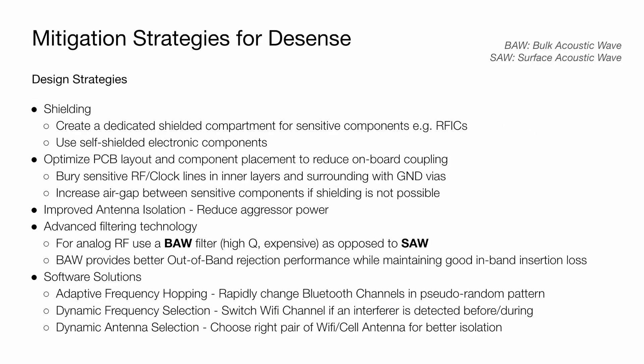Let's talk about mitigation strategies for desense. Shielding is one of the most popular techniques in the industry — you can create a shield can around sensitive components such as the RFIC. If you're heavily constrained on space, you can also go for self-shielded electronic components. Optimizing PCB layout and component placement is another approach: you can bury sensitive clock and RF lines into inner layers surrounded by ground vias, or increase the air gap between components where shielding is not an option.